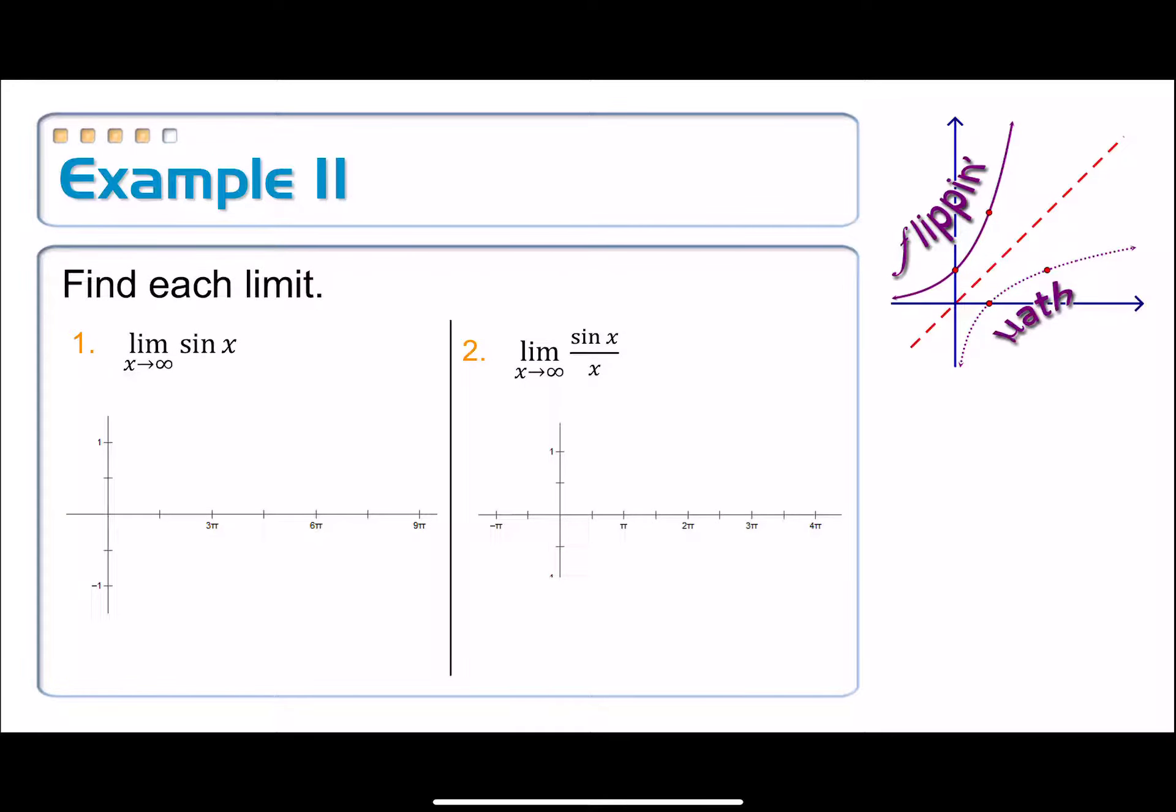Let's do more of these limits at infinity. On number one, we get the limit as x approaches infinity of sine x. Well, if we try our strategy of direct substitution, the sine of infinity, does that approach infinity? Does it settle on a particular number?